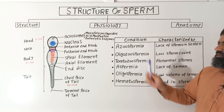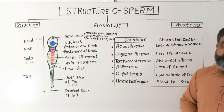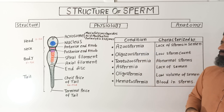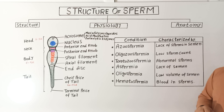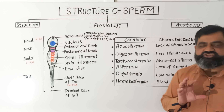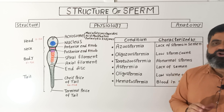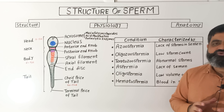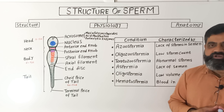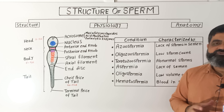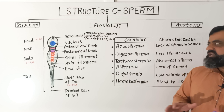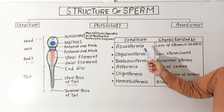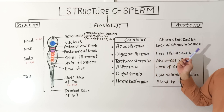The first condition is known as aspermia, which means a lack of sperms in the semen. This is a congenital condition or it can arise later in life due to the use of corticosteroids or excessive use of androgens, which can lead to infertility.